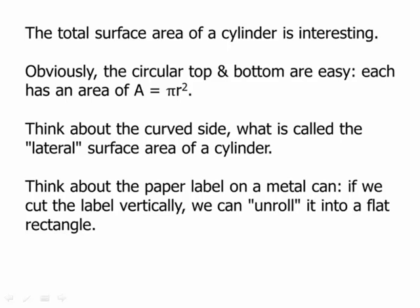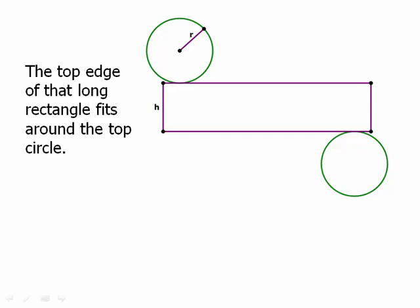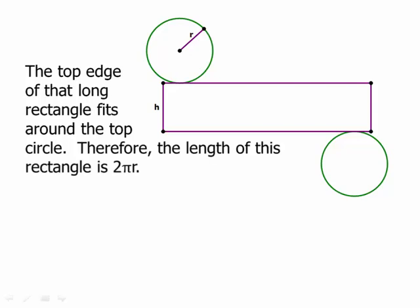Think about a paper label on a metal can. If we cut the label vertically, we can unroll it into a flat rectangle. So imagine we have the top and bottom of a can and then that label, we cut it vertically and then we unrolled it so it was flat. So that the top edge of that long rectangle fits around the top of the circle. So that means that the length of that is the circumference of the circle, 2 pi r. And of course, the height is h. So we have a height h and a width 2 pi r. So the lateral surface is 2 pi r h. That's the rectangle.